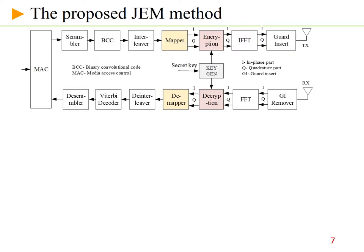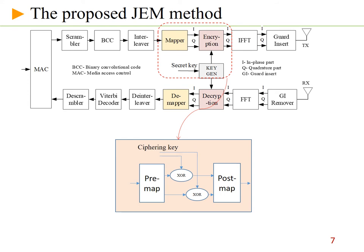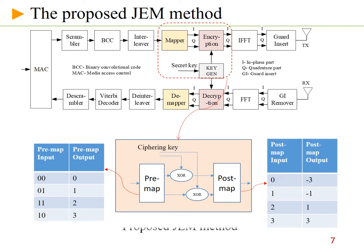Based on the above idea, we propose the GAM method that merges the operations of the mapper and encryption into one component. The encryption is divided into two states named pre-map and post-map. The XOR operation is placed between the pre-map and post-map.